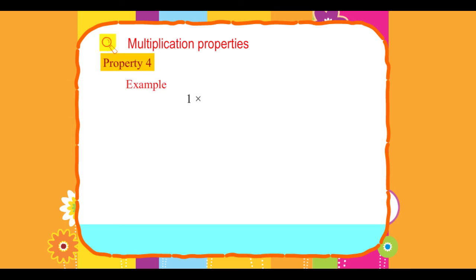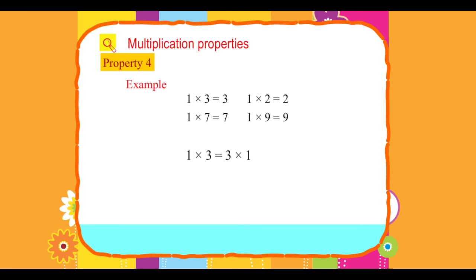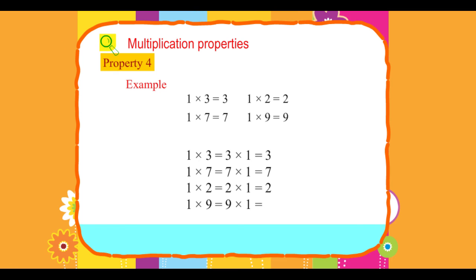Examples: 1 × 3 = 3, 1 × 7 = 7, 1 × 2 = 2, and 1 × 9 = 9. Since multiplication is commutative: 1 × 3 = 3 × 1 = 3, 1 × 7 = 7 × 1 = 7, 1 × 2 = 2 × 1 = 2, and 1 × 9 = 9 × 1 = 9.